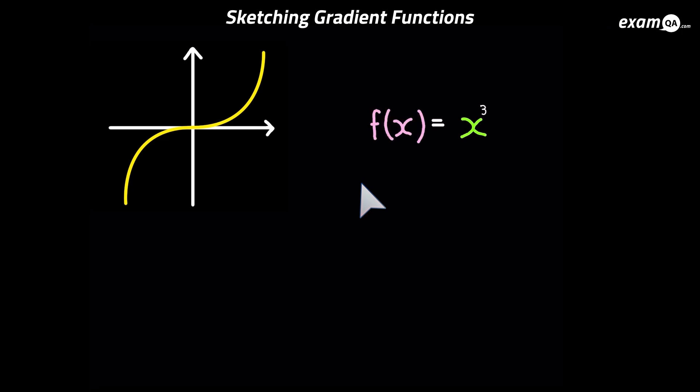So here I've got a function, and it's the graph of x cubed. What we can do is differentiate it, and that gives us 3x squared. And you should be able to do that comfortably.